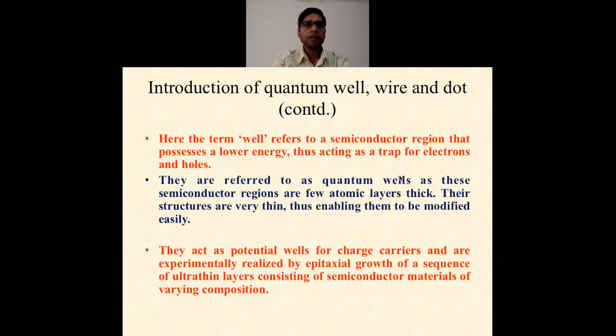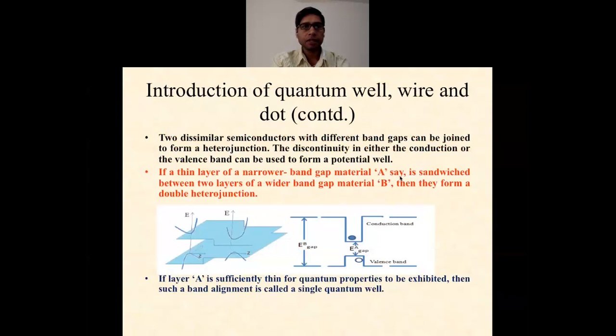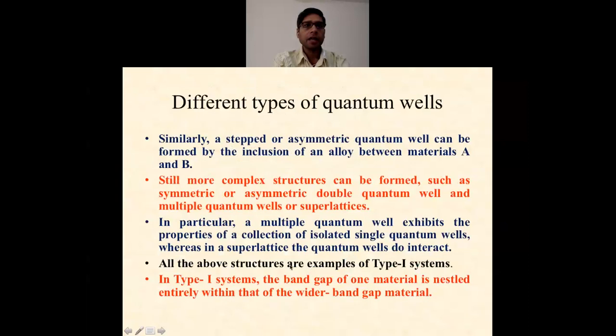Now, the quantum well. Here, the term well refers to the semiconductor region that possesses lower energy, thus acting as a trap for the electrons. They are referred to as quantum wells as these semiconductor regions are few atomic layers thick. That is why they are called quantum wells, and they act as a potential well for charge carriers. They are experimentally realized by epitaxial growth of a sequence of ultrathin layers. Two dissimilar semiconductors with different band gaps can be joined together to form a heterostructure junction, and the discontinuity in either the conduction or the valence band can be used to form the potential well in a thin layer of narrower band gap material A. You can see here, sandwiched between two layers of wider band gap material B. They form a double heterostructure junction. If layer A is sufficiently thin for the quantum properties to be exhibited, then such a band alignment is called a single quantum well. Here you can see how they are formed or synthesized.